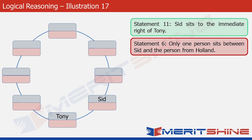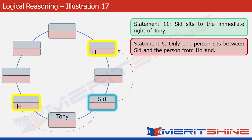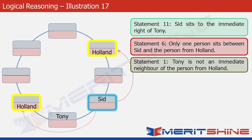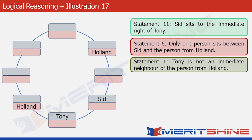Statement 6 says that only one person sits between Sid and the person from Holland. With Sid's position highlighted, the person from Holland sits at a gap of one position from Sid, giving two possibilities. We write Holland in both boxes for now. Statement 1 then says Tony is not an immediate neighbour of the person from Holland, which rules out one position, leaving the correct position for Holland confirmed.